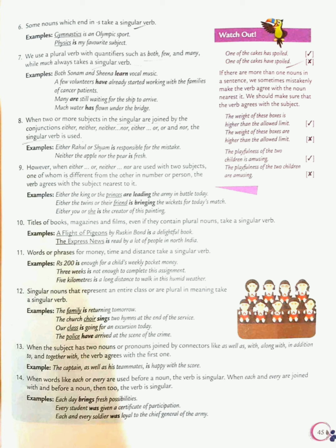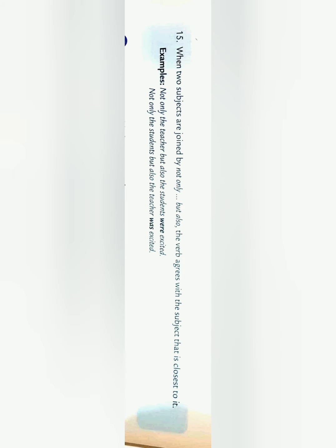And the last is, when two subjects are joined by not only but also, the verb agrees with the subject that is closest to it. This rule makes you confused a lot of time, but it is easy once you get it. For example, not only the teacher but also the students were excited. You can see that teacher is singular but students are plural in number, so you will be using plural verb with it. But if we reciprocate the sentence, we will have not only the students but also the teacher was excited. Here the places of two subjects have been changed. When teacher comes at the second place, it becomes a singular subject, and with a singular subject, you always use a singular verb.